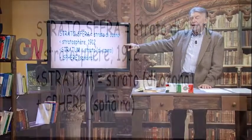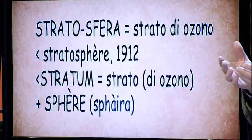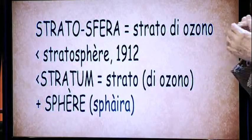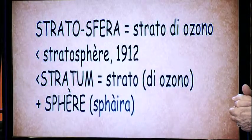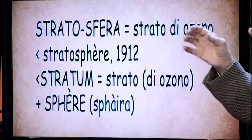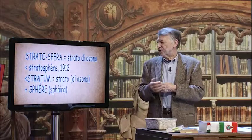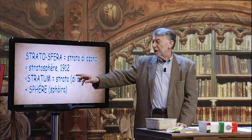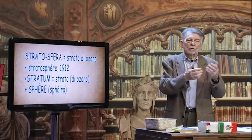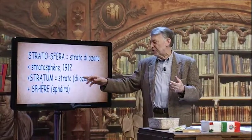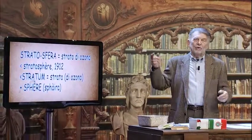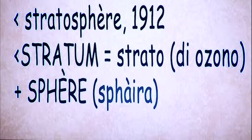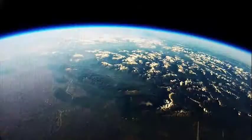Il limite alto dell'atmosfera è definito stratosfera, un termine molto recente, del 1919, quando si venne a scoprire la costituzione di ciò che sta sopra di noi. La stratosfera è quello strato di ozono che è al di sopra dell'atmosfera. Stratosfera è una parola francese composta con termini antichi: stratum in latino significa strato, sottinteso di ozono, e sfera in francese proviene anch'essa dallo sfaira greco che significa sfera.